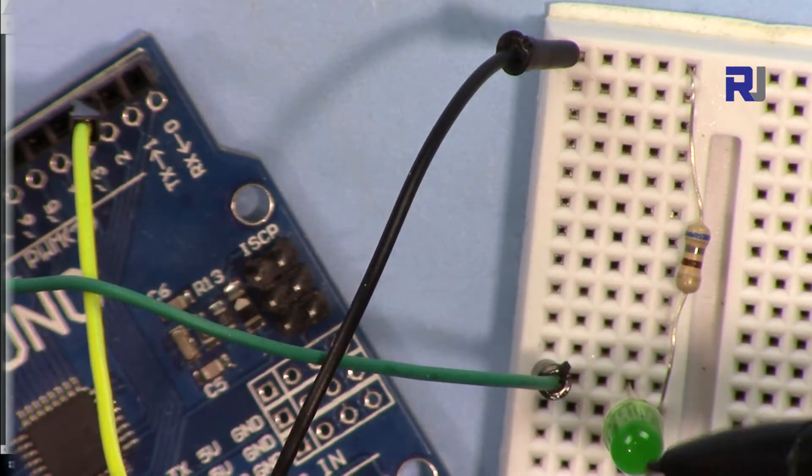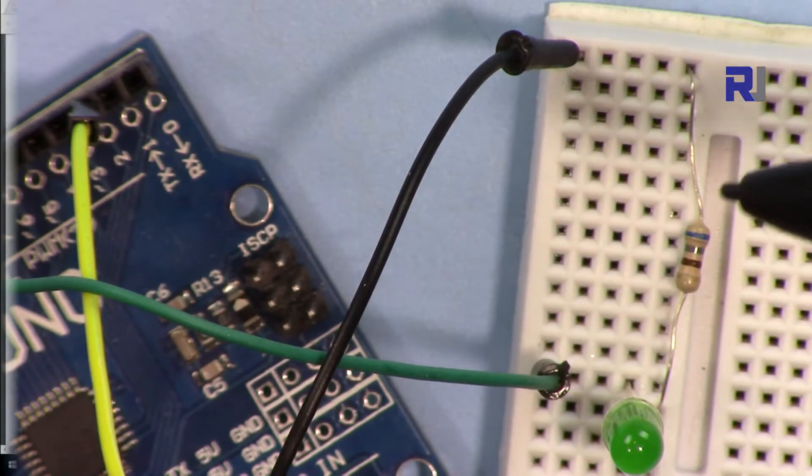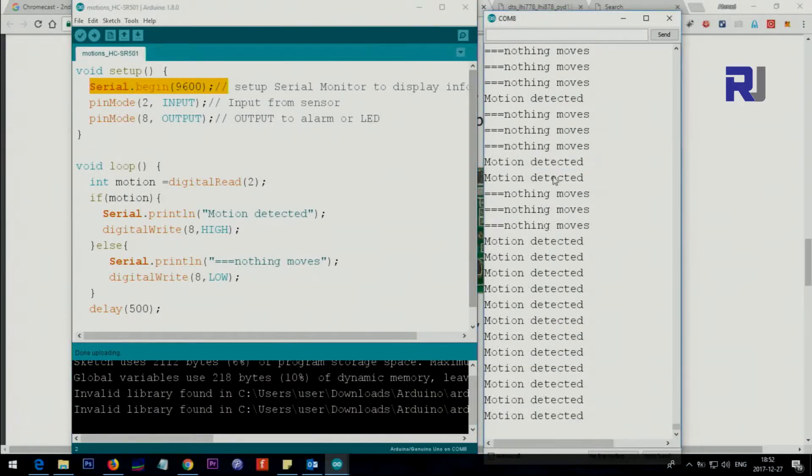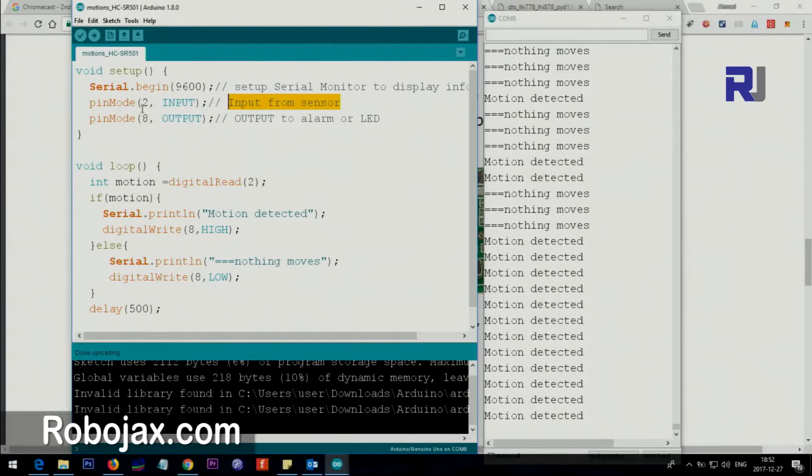This LED will turn on. The positive will come this way and enter the LED and then goes from this resistor to the ground. Here is the code. The code is very simple. Inside the setup I have set the serial monitor for 9600 baud to display the information, and then I have set up pin 2 as an input. This is where you connect your sensor, the middle wire from the sensor to this pin. Pin 8 is an output, so when it detects we will send this pin to high so we can turn on some alarm or LED.